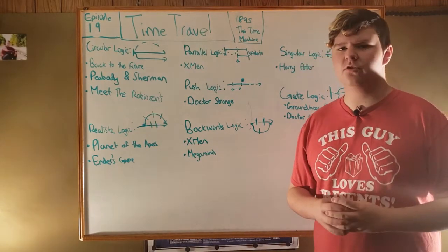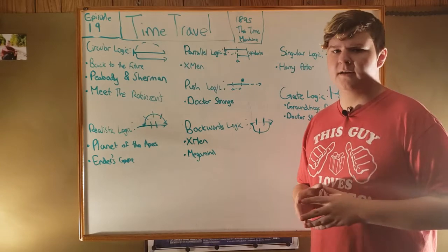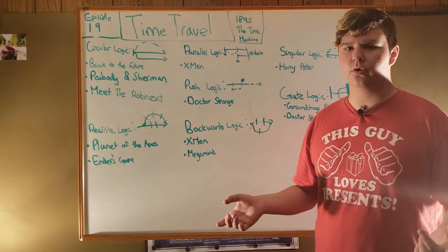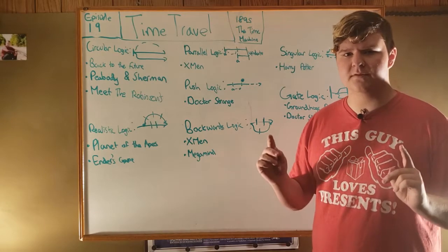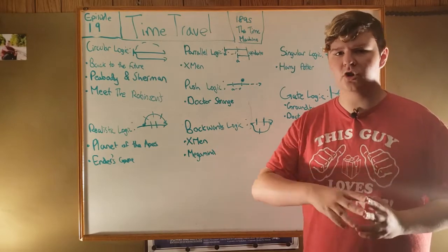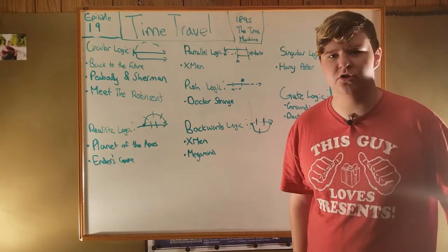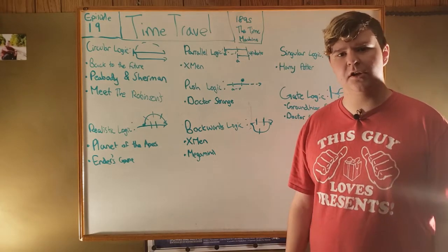The movie Megamind also plays with this with its main hero, Metro Man, being able to interact with the world super quickly, meaning it appears really slow to him because he perceives it so quickly, allowing him to go all the way around the world if he wanted to without time moving hardly at all.